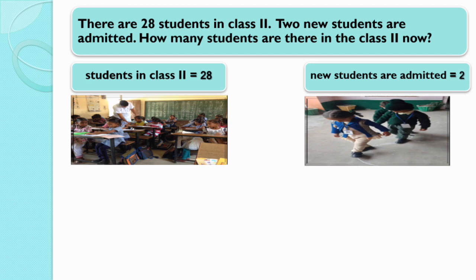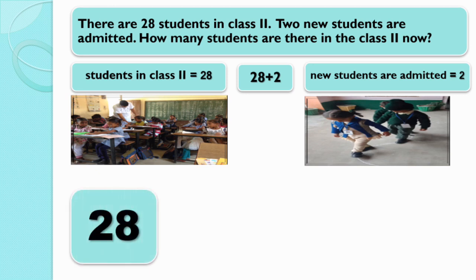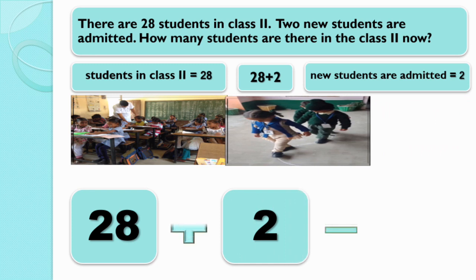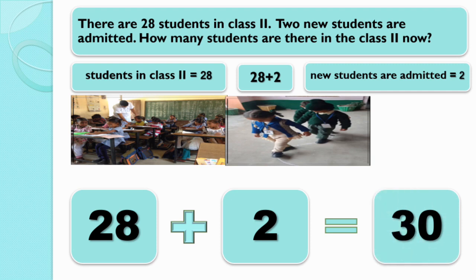There is addition, so we will add 28 and 2. 28 plus 2 is equal to 30. Yes — 30 students are there in class second now.